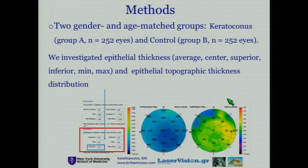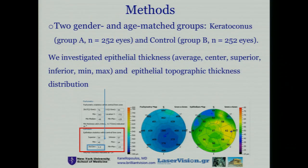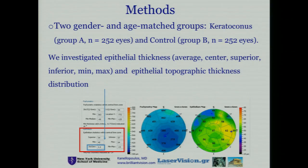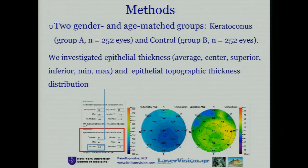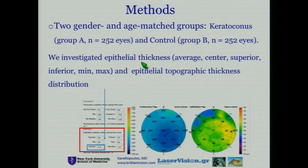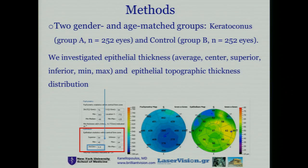Our team in Athens screens all patients with a lot of imaging material, and our methods involve two groups of 250 eyes that were investigated for epithelial thickness and epithelial topographic thickness distribution.